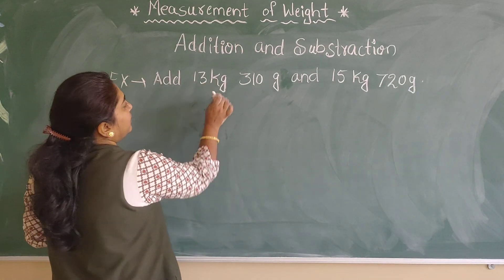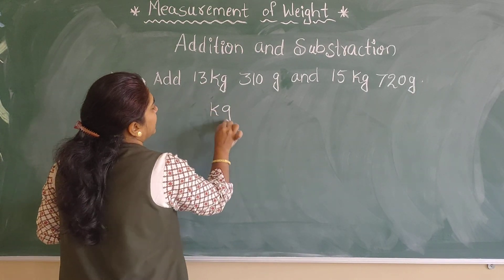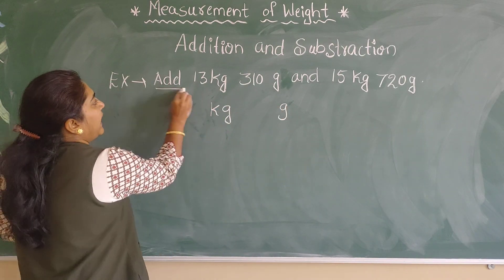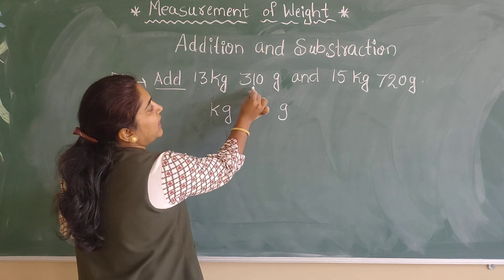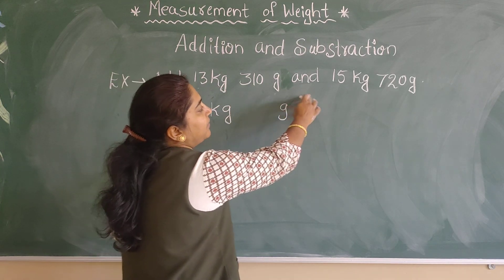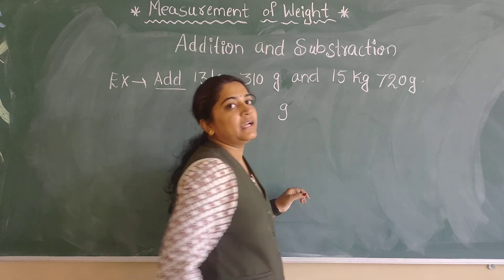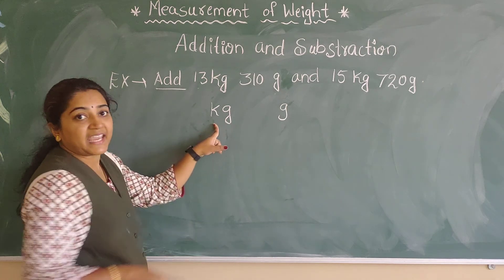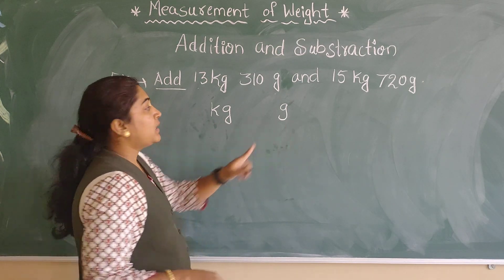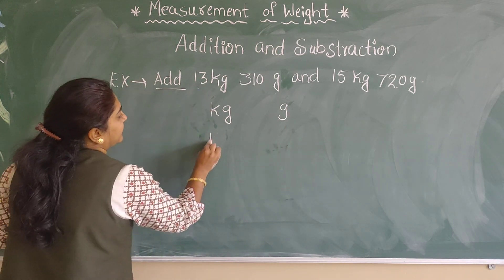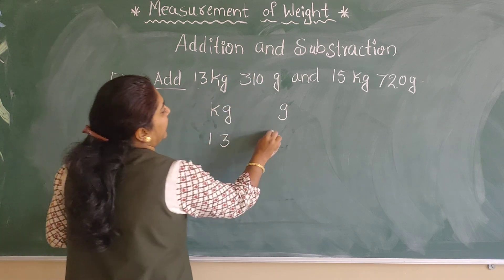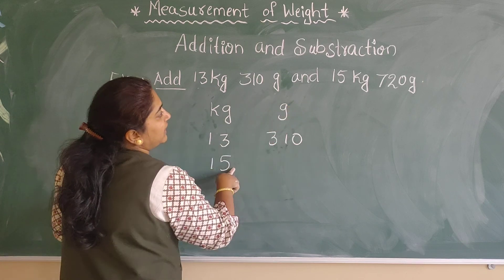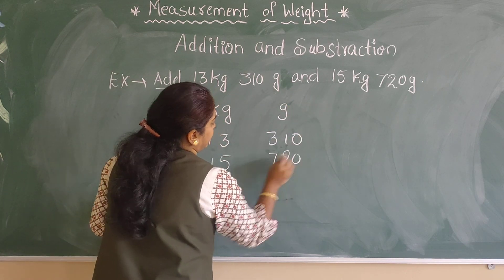How we have to treat this? We have to write kg and gram. For example, add 13 kg 310 gram and 15 kg 720 gram. I will make two columns — one is kg and another one is gram. I will write 13 kg 310 gram, and below that 15 kg 720 gram.